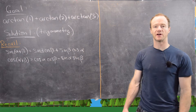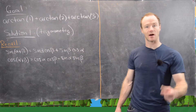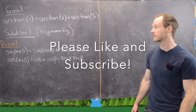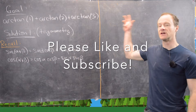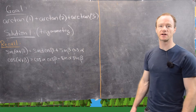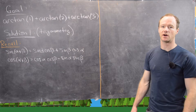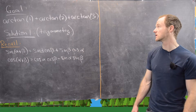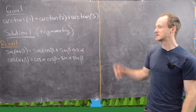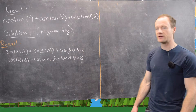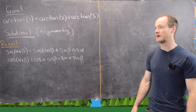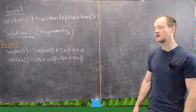In this video, we're going to look at a very classic trigonometry problem, and we're going to solve it three different ways. Our goal is to calculate the arctan of 1 plus the arctan of 2 plus the arctan of 3. Our first way is just using straight trigonometric identities.